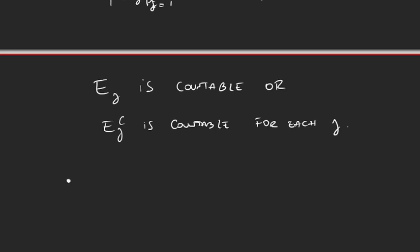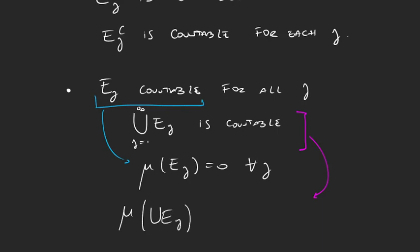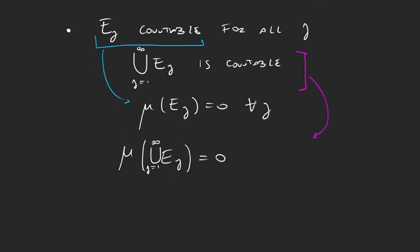The first case is what happens if all of these E sub j's are countable. Well, then the union of countable sets is countable. So what this first statement is telling us is that the measure of E sub j is 0 because it's countable, and this happens for every j. And this second statement is telling us that the measure of the union, because the union is countable, is also 0. So then I can just add all the measures of E sub j and as they are all 0, it'll give me 0. So then we get that the measure of the union is actually the sum of the measures, because all this is equal to 0. So that was the easy case.